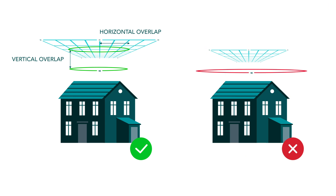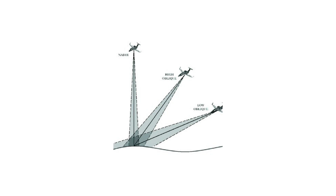What you really need is a group of images that overlap with each other both on the roof as well as on the facade and also amongst each other. To achieve this you can use something called oblique images. Typically when a drone takes images it's taking them at a negative 90 degree angle — looking from the top to the bottom — these are called nadir images. However, you can combine nadir images with oblique images, which come in two types: high oblique images and low oblique images.